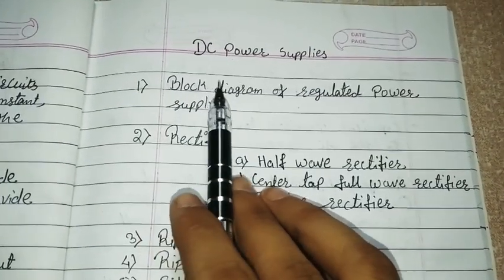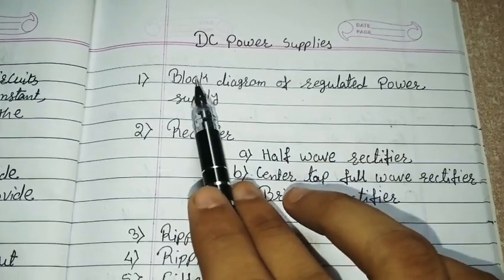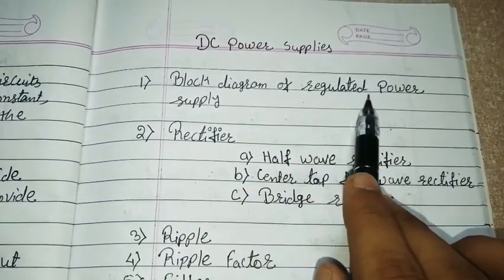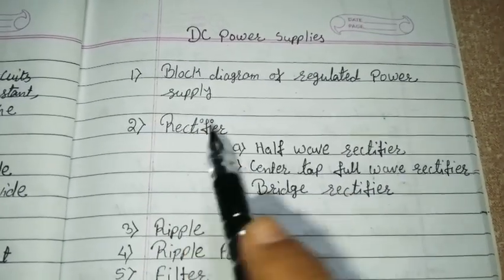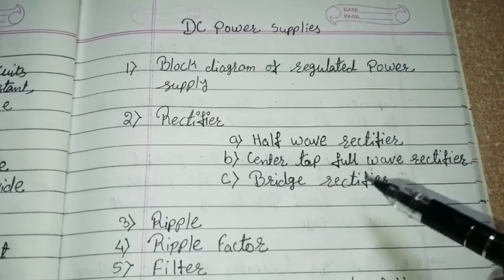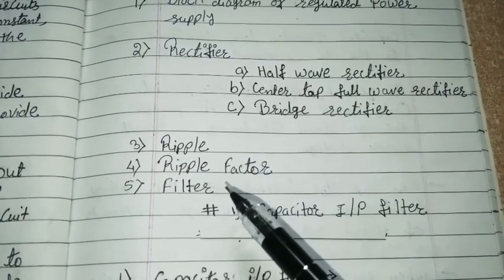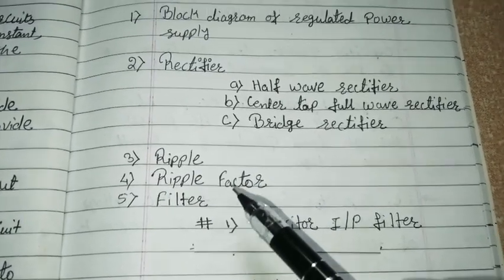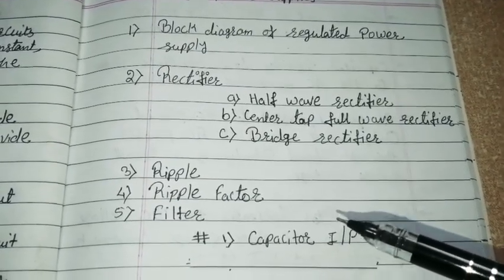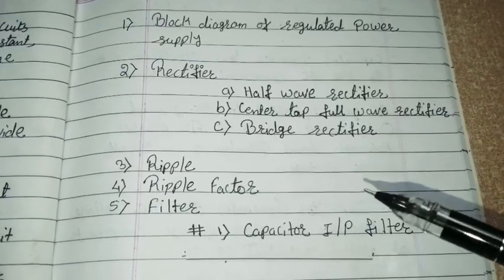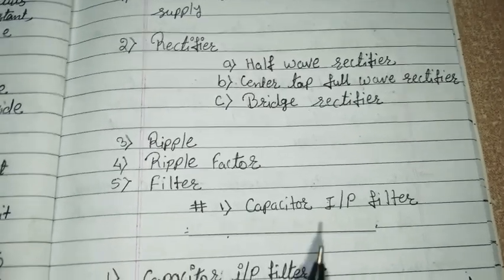So far in the chapter DC power supplies, we have learned about the block diagram of a regulated power supply, a brief introduction to each block — the rectifier and its types — and we have learned about ripple and ripple factor, and the introduction of filters. If you missed these lectures, the links are available in the description. Today we will learn one of the types of filters: the capacitor input filter.